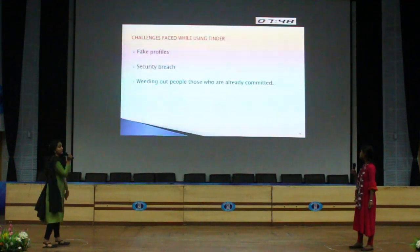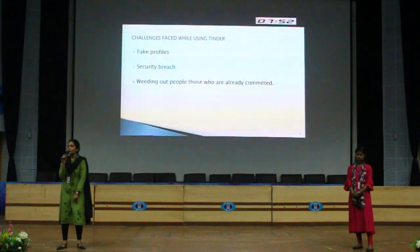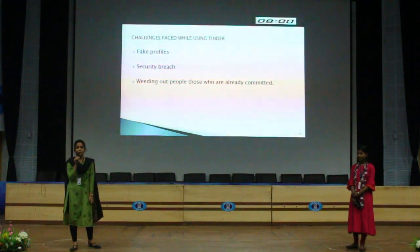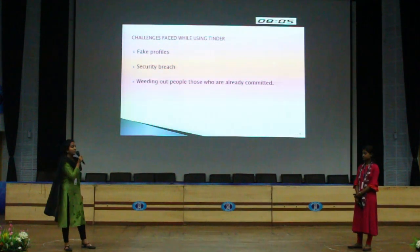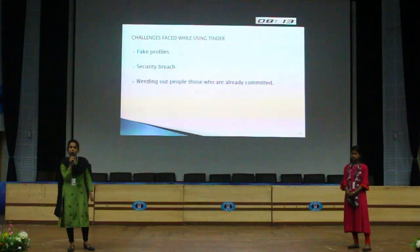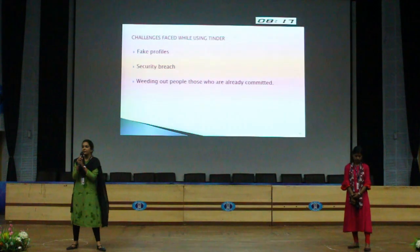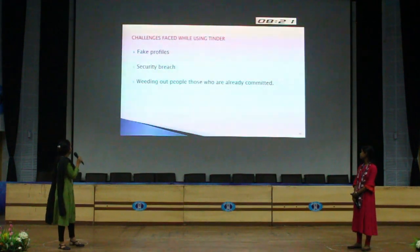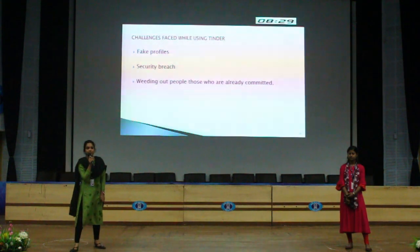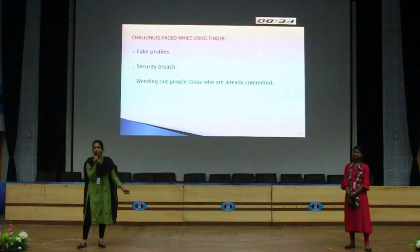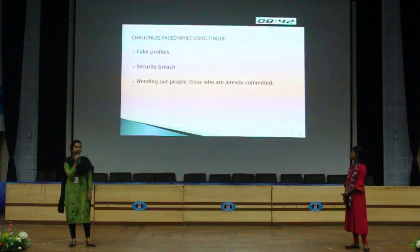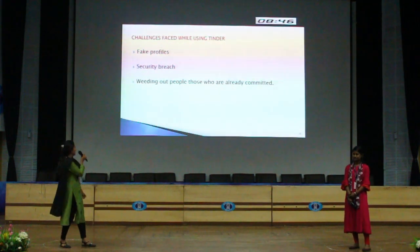Challenges faced while using Tinder include fake profiles — if you get a perfect match, the person may have given fake information regarding their age, work experience, or residential address, which can lead to problems. There are also security breaches, as photos uploaded to Tinder can spread globally over the internet. Additionally, 35% of people who are single use Tinder, 16% who are divorced use it, and 12% who are already in committed relationships still use Tinder — which is a disadvantage.